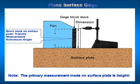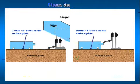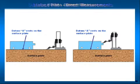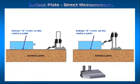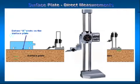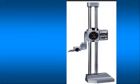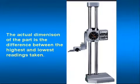To make a direct linear measurement on the surface plate: the surface plate is the starting point or surface datum A. Rest the tip of the indicator on the surface plate and, using the fine adjustment knob, set zero on the indicator. Next, read the vernier scale on the height gauge and write down the reading. A vernier scale is a small, movable, graduated scale used for measuring a fractional part of one of the divisions of a fixed scale. Then raise the indicator and rest the tip on the part surface. Again, using the fine adjustment knob, set zero on the indicator. Take a second reading on the vernier scale and write it down. The actual dimension of the part is the difference between the highest and lowest readings taken.